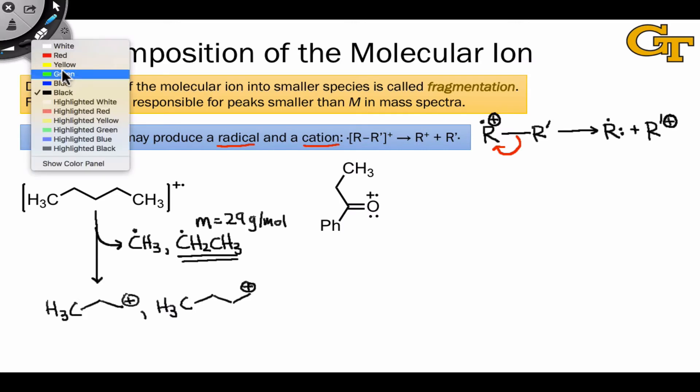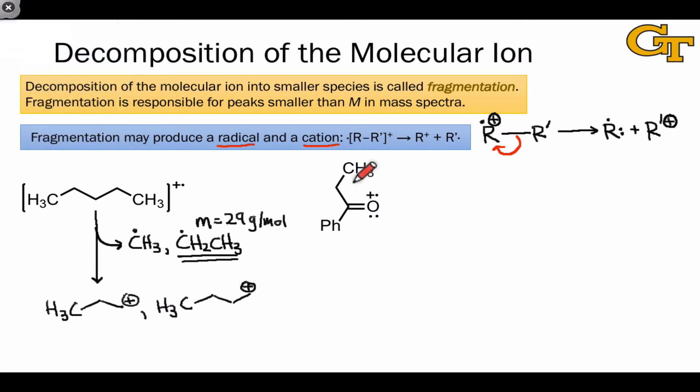Fragmentation is often driven by the formation of more stable species than the original molecular ion, and in the case of ionized carbonyl groups, this is absolutely an important effect. In a process known as alpha cleavage, the radical electron on oxygen combines with one of the electrons in a bond between the carbonyl carbon and the group it's attached to, let's say it's a carbon, to form a new triple bond.